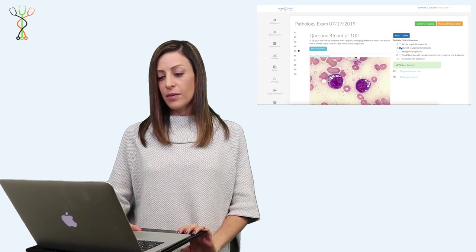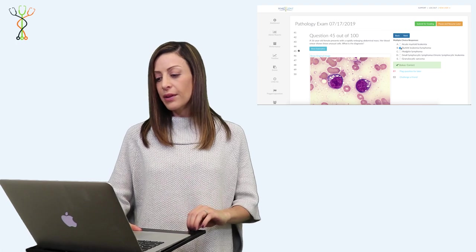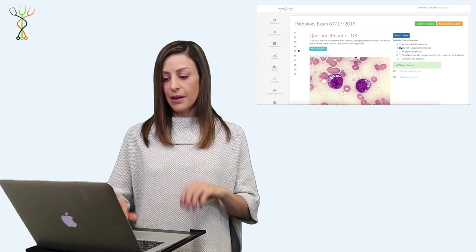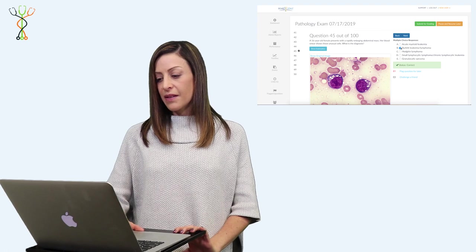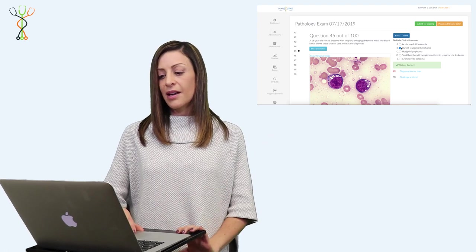At higher power you'll see these histiocytes—they're really irregularly shaped. They have a lot of clear cytoplasm, pale nuclei, and a lot of inconspicuous nucleoli. Those are the classic findings. If you take a look at images on high and low resolution, you should see these classic findings.